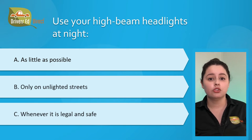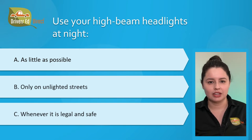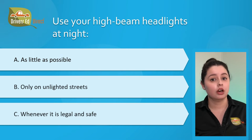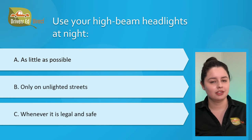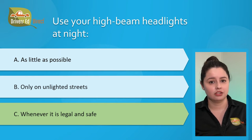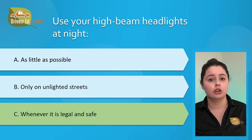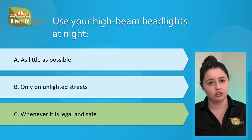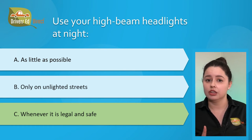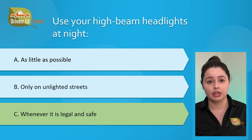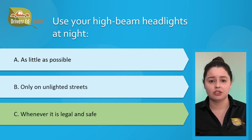Question number five: use your high beam headlights at night. A) as little as possible, B) only on unlighted streets, or C) whenever it is legal and safe. The correct answer is C, whenever it is legal and safe. You want to use your high beams whenever possible on open country roads or on dark city streets. As long as it's not illegal, make sure to dim your lights whenever necessary so you don't blind other drivers.